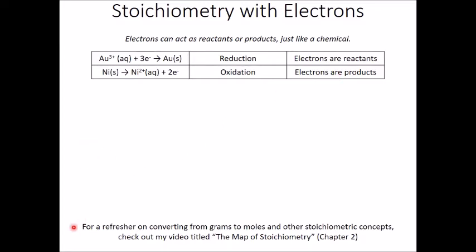So now for an example, how many moles of electrons are released when 5.44 grams of gold is oxidized to gold 3+? Just as a reminder, if you need a refresher on converting from grams to moles and other stoichiometric concepts, you should check out my video from last semester called the Map of Stoichiometry. That was posted in chapter 2.